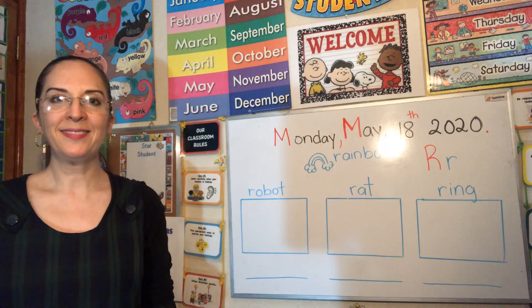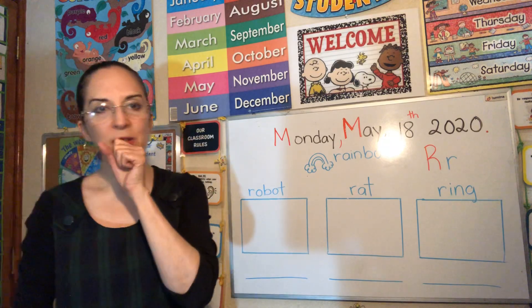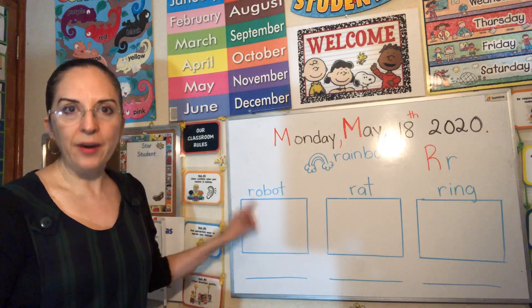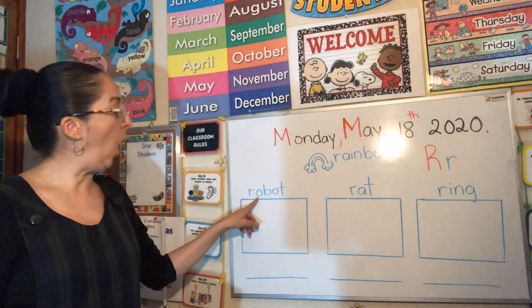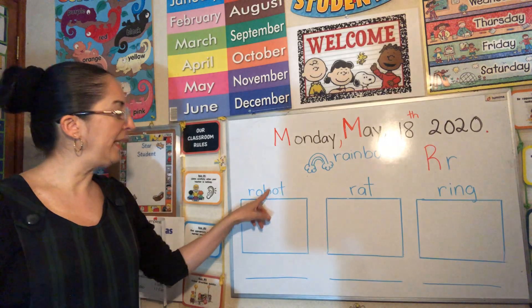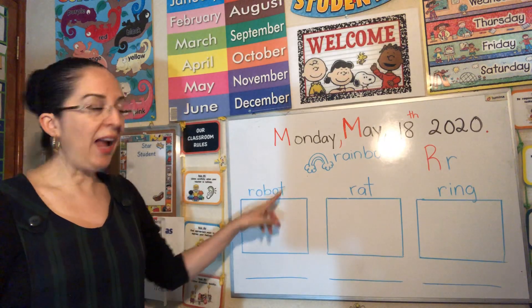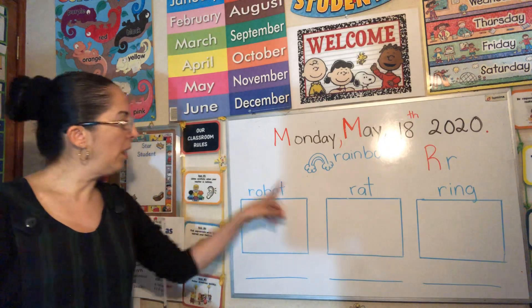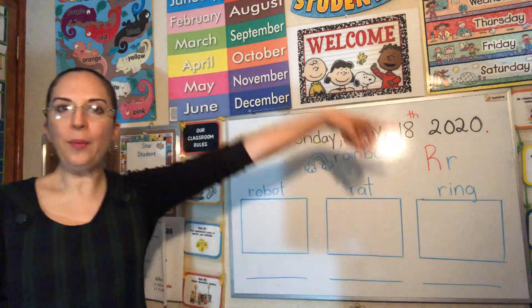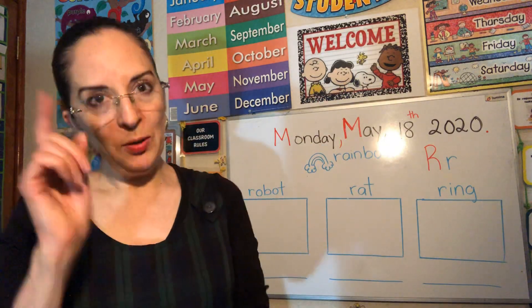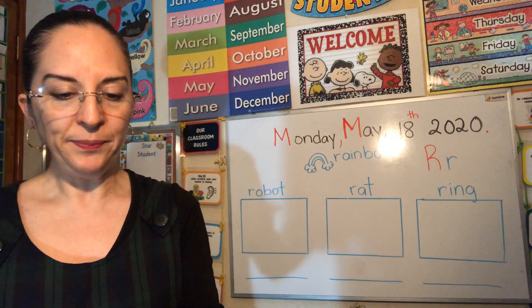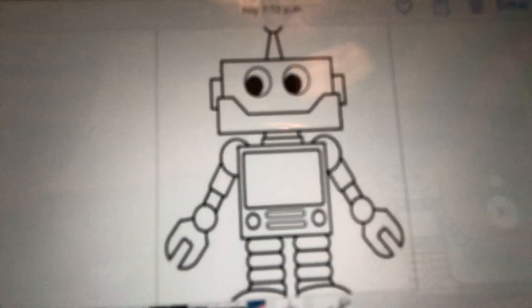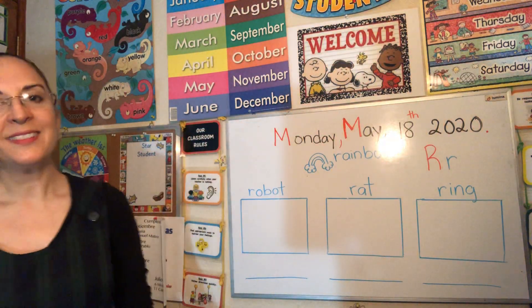Ready? Let's continue with the first word. Who can read the first word? The beginning letter is R. Very good. Next: O. Next: B. Next: O, T. Again — R, O, B, O, T. Now read the word. Robot. Again: robot. Very good. Okay, draw a robot. I'm going to show you a picture. I have a robot here. Robot. Draw a robot.